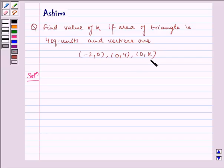Now let us write the solution. When vertices of a triangle are given, then area of triangle ABC is given by half into determinant of -2, 0, 1, 0, 4, 1, and 0, k, 1.